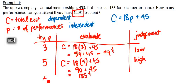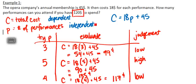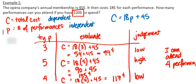We try now 4 performances. C equals 18 times 4, plus $45. 18 times 4 is 72, plus $45 is $117. We could compare this. This is still low, but it is closest to the $120 without going over. So my final answer is, I can attend 4 performances with $120, and I'll have $3 left.